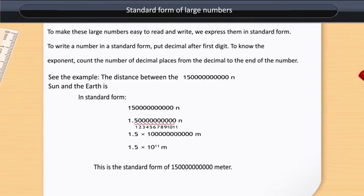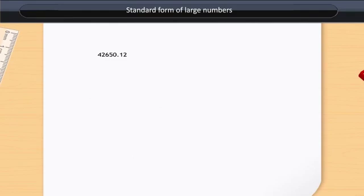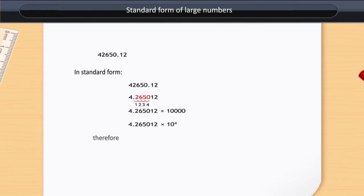We now consider another example: 42,650.12. In standard form, after shifting the decimal point, it becomes 4.265012, which equals 4.265012 multiplied by 10 raised to the power 4.